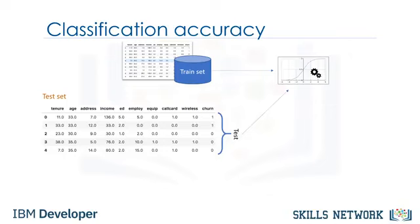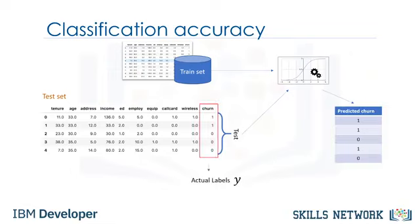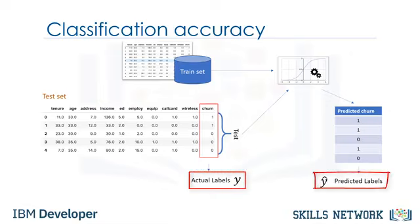We pass the test set to our model and we find the predicted labels. Now the question is, how accurate is this model? Basically, we compare the actual values in the test set with the values predicted by the model to calculate the accuracy of the model. Evaluation metrics provide a key role in the development of a model as they provide insight to areas that might require improvement.